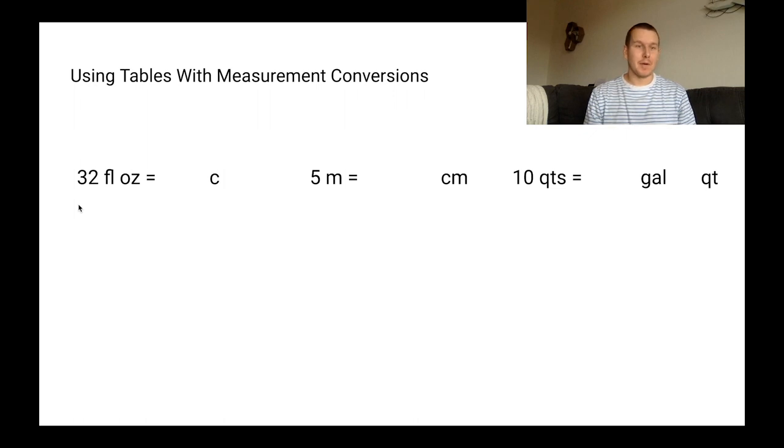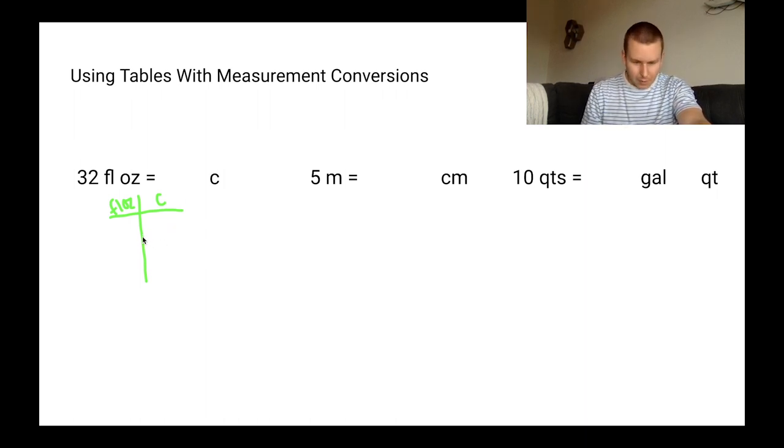All right, let's start off with this first problem here. Looks like we're converting from fluid ounces into cups. So I'm going to create my table here. Just a simple t-chart. And we're going to be going from fluid ounces over to cups. So the first thing I need to find is the actual conversion. And it looks like for every eight fluid ounces, there's going to be one cup. This is a little backwards from how we did it before. Eight and one. It's a little bit backwards, but we can still do this.